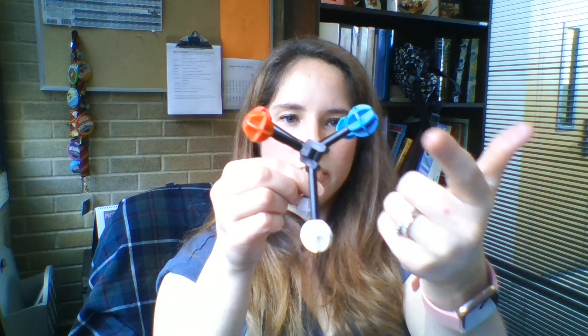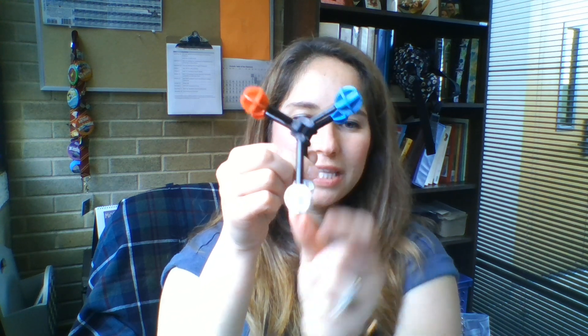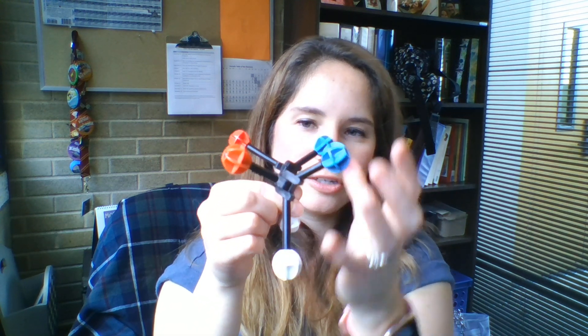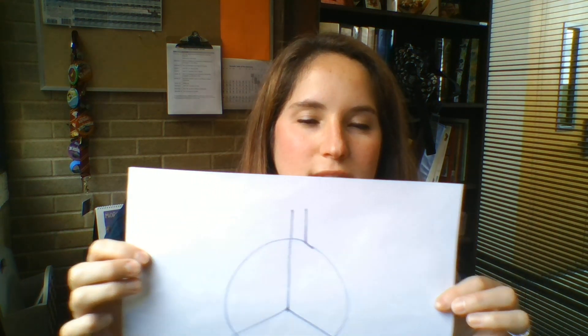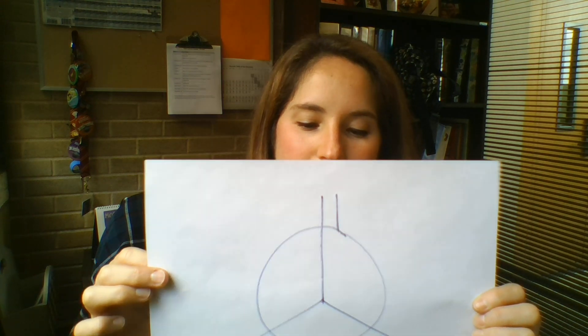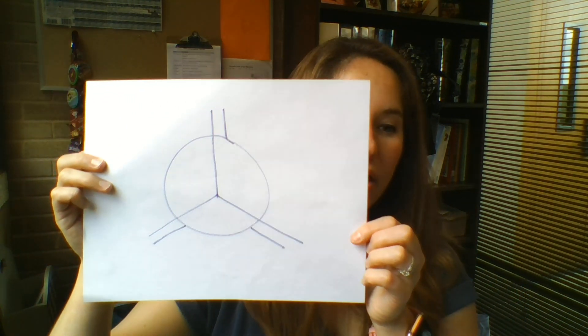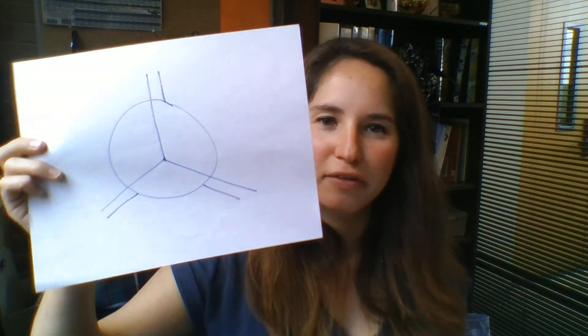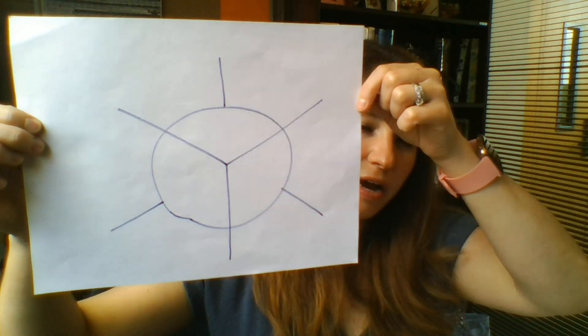Now we have our blue hydrogens eclipsing each other, our red hydrogens eclipsing each other, and the white ones are eclipsing as well. This forces these hydrogens to line up their electron domains when they would prefer to spread out as much as possible. For that reason, the eclipsed conformation is the less favored conformation — it's a much higher energy scenario. Atoms do everything they can to be low energy, so the staggered conformation is our low energy, higher stability option.